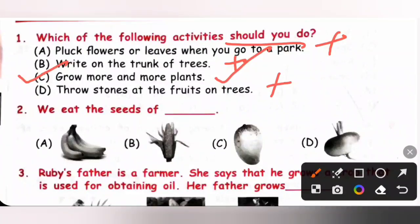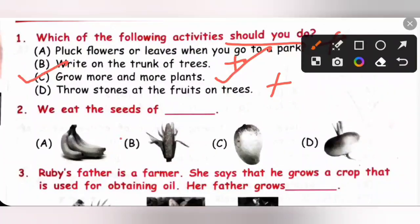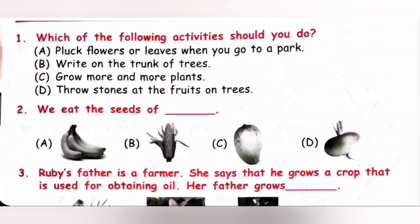Second one, we eat the seeds of dash. Option A: banana, B: corn, C: mango, D: beetroot. We eat the seeds of corn, so option B is the correct answer.